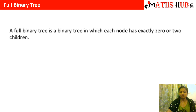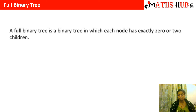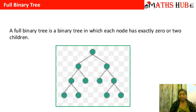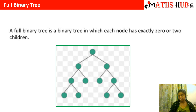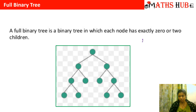Now let's move on to a full binary tree. A full binary tree is a binary tree in which each node has exactly 0 or 2 children. In this example the root vertex has 2 children, the next internal vertices each have 2 children, and the last 4 leaf vertices have 0 children. So either the number of children is 2 or it is 0 — such a tree is called a full binary tree.